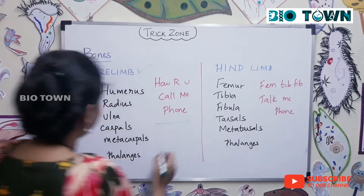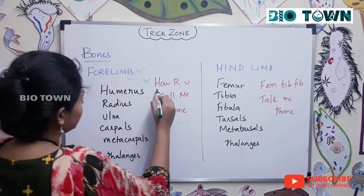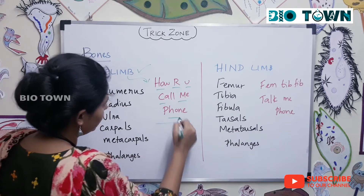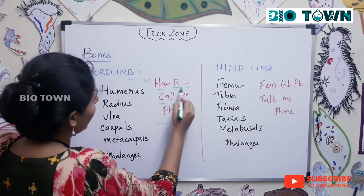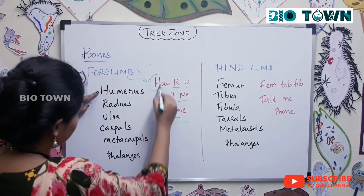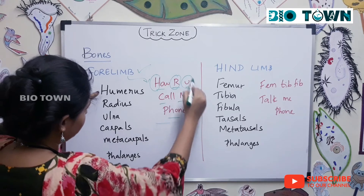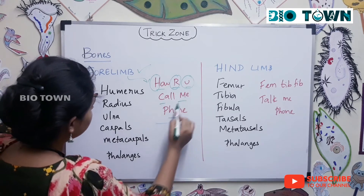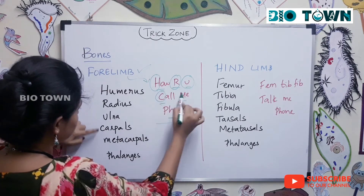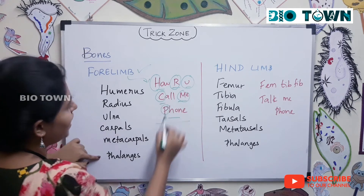Now how to remember? For forelimb, the mnemonic is: 'How are you? Call me phone.' How are you — H(umerus), R(adius), U(lna). Call me phone — C(arpals), M(etacarpals), P(halanges).